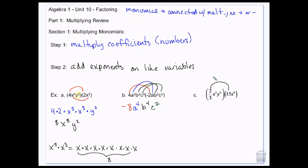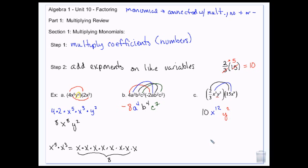2 thirds times 15. 3 goes into 15 five times. 2 times 5 is 10. So that gives me 10. x to the 3rd and x to the 9th, that's 3 plus 9, so that's x to the 12th. And then that y squared was just by itself, so it stays y squared.